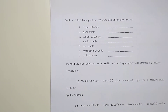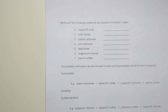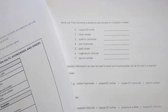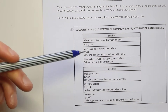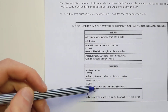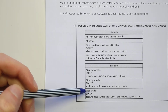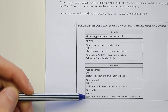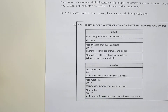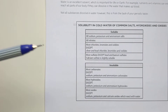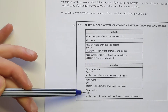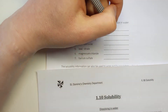Putting that into practice — working out if substances are soluble or insoluble in water using the back of the periodic table. For the first example, copper(II) oxide: looking at the oxides category, most oxides are insoluble apart from sodium, potassium, and calcium oxide which react. Copper is not mentioned as an exception, therefore copper oxide is insoluble.